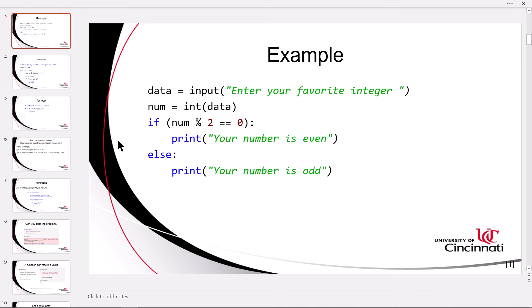We left off on slide 3, talking about basic control flow and an if-else expression. This is our first introduction to indenting. When we create the if block and the else block, we need to indent all the code inside each of those blocks to indicate to Python that that code is part of the block.